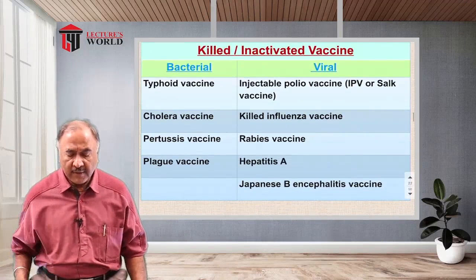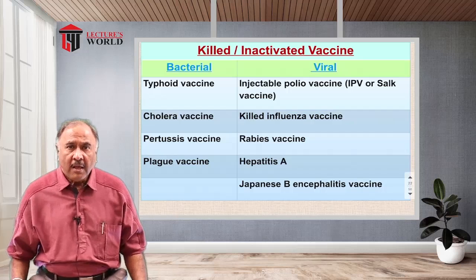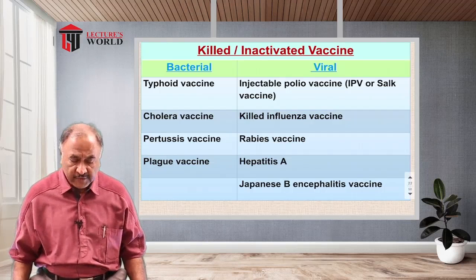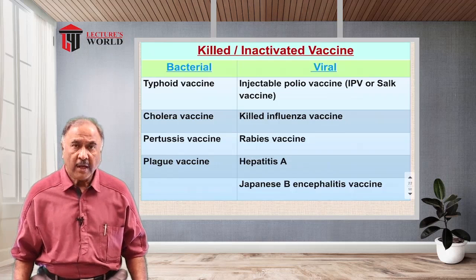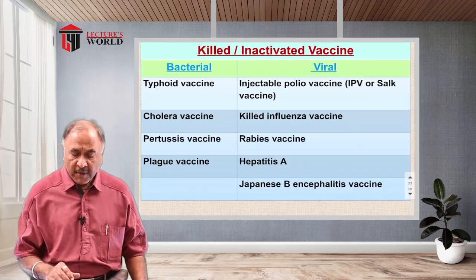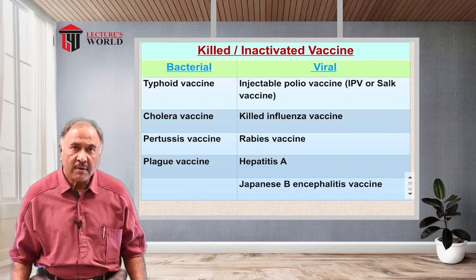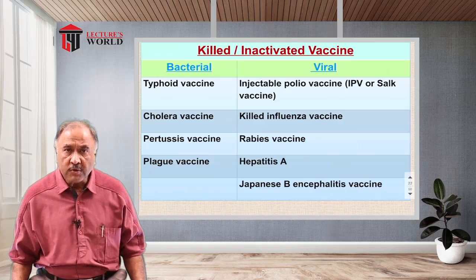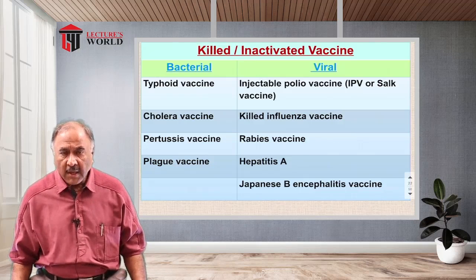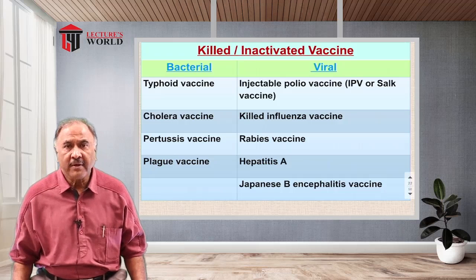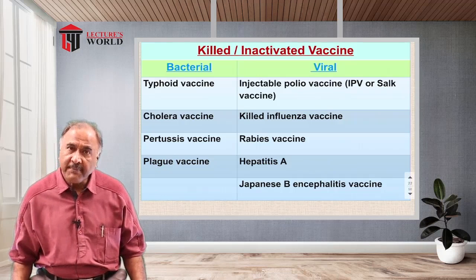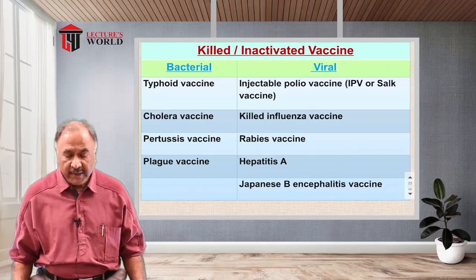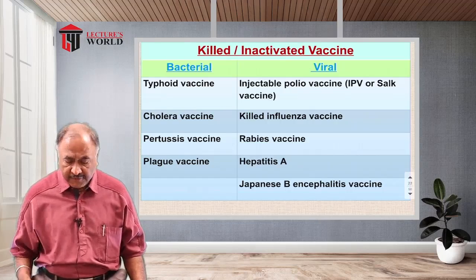Examples of killed or inactivated vaccines include bacterial vaccines such as typhoid, cholera, pertussis, and plague vaccines. In the case of killed virus vaccines, these include injectable polio vaccine (IPV), also known as the Salk vaccine, named after its discoverer Jonas Salk. Then there is killed influenza vaccine, rabies vaccine, vaccine against hepatitis A, and Japanese B encephalitis vaccines.